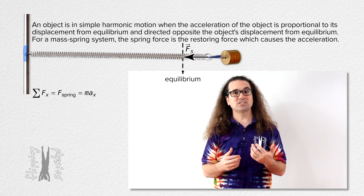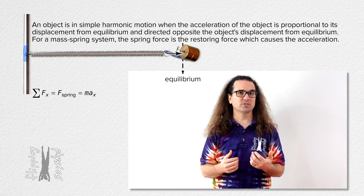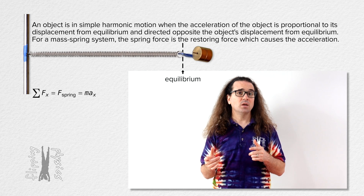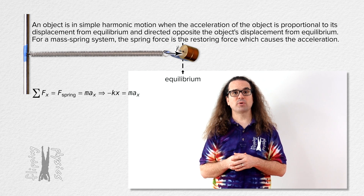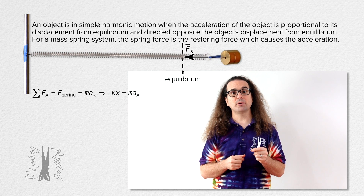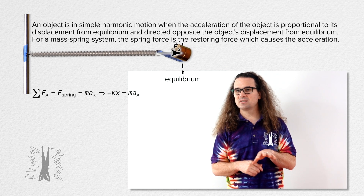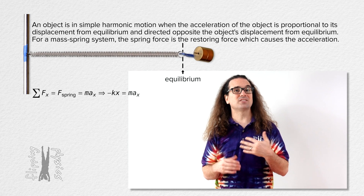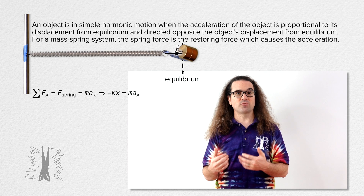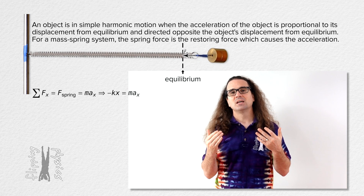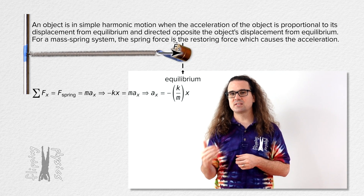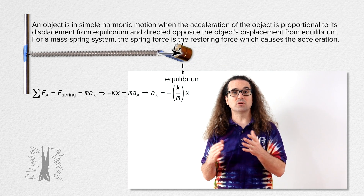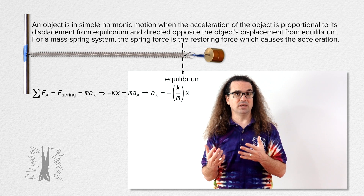The net force in the x direction equals the spring force and it also equals mass times acceleration in the x direction. We can substitute the negative of the spring constant times displacement from equilibrium in for the spring force. The reason this is negative is because the spring force is a restoring force and is always directed opposite from the direction of the displacement from equilibrium. Notice the negative means the acceleration and displacement are always in opposite directions, regardless of whether the mass is to the left or to the right of equilibrium.